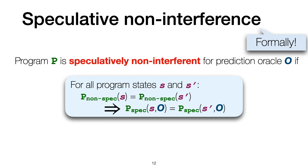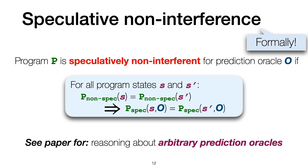Observe that speculative non-interference is a non-interference style property where the non-speculative semantics describes what information we are allowed to leak. Finally, observe that speculative non-interference is parametric in the prediction oracle, which depends on the specific CPU branch prediction strategy. To overcome this limitation, in the paper we present a way of reasoning about arbitrary prediction oracles.